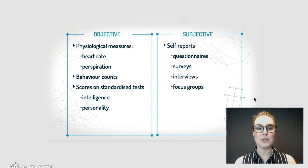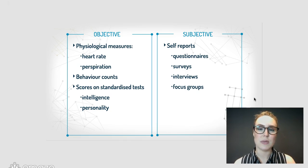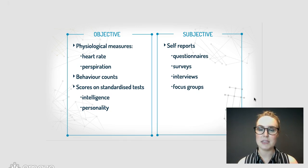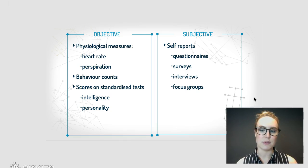Let's look at some examples. For objective data, you could have physiological measures like heart rate or the amount someone perspires, a behavioral count of how many times someone performs a certain action, or a score on a standardized test such as intelligence or personality. For subjective data, examples of self-reports include questionnaires, surveys, interviews, and focus groups — all of which we'll be talking about in due course.